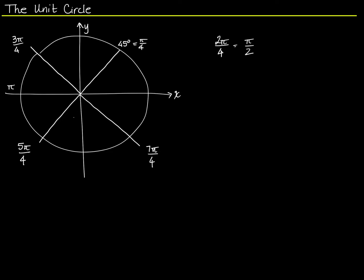I actually find it easier to count pi over 4s. But you can also just add 45 degrees. Starting at 0, you have 1 times 45 degrees, 2 times 45 degrees is 90, 3 times 45 degrees is 90 plus 45, or 135, and so on.